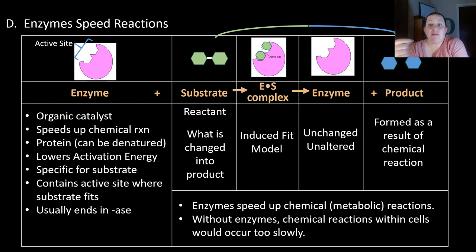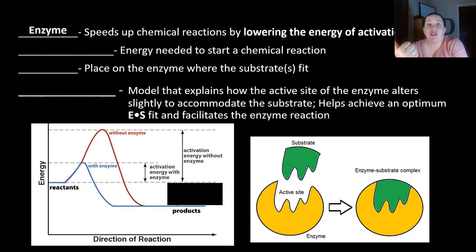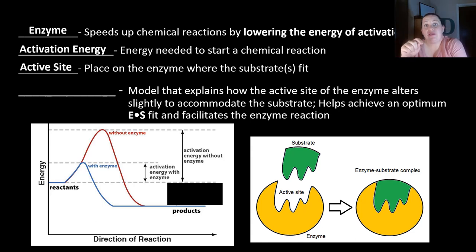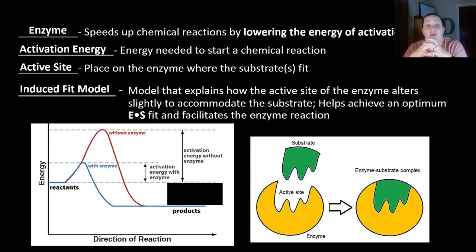Enzymes are important because they speed up reactions, and without them, chemical reactions within cells would occur too slowly — the cells would ultimately die. Enzymes speed up chemical reactions by lowering the activation energy, which is the energy needed to start a chemical reaction. Without the enzyme, the activation energy is high; with the enzyme, it's much lower and faster. The active site is where the substrate fits in, and this is known as the induced fit model, where the active site and enzyme slightly accommodate each other.